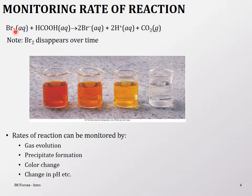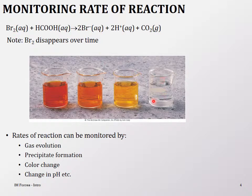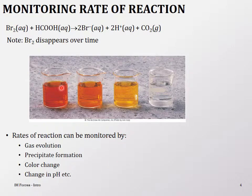For example, if bromine is reacting with formic acid, the bromine, which is a dark reddish colored liquid, will disappear over time because in the product you don't have bromine — you have bromide ions, but not bromine as a liquid. By the time the reaction is done, you should have absolutely no color, whereas initially you had the red color. So disappearance or appearance of color change can indicate the reaction. And if you have a change in pH, you can look at that also. Nowadays we can also use instruments to figure out the rate of reactions.